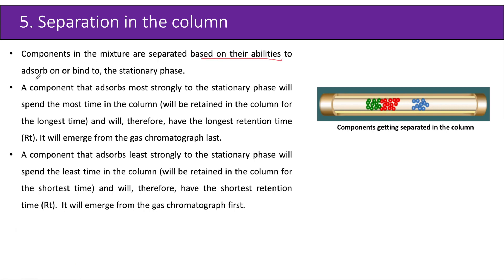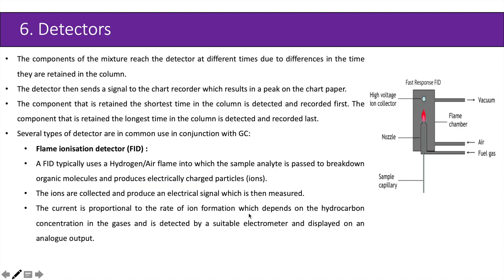The next step is separation in the column. Components in the mixture are separated based on their ability to adsorb or bind to the stationary phase. A component that adsorbs more strongly to the stationary phase will spend the most time in the column, having the longest retention time, and will emerge from the gas chromatograph last. A component that adsorbs least strongly will have the shortest retention time and will emerge from the gas chromatograph first.